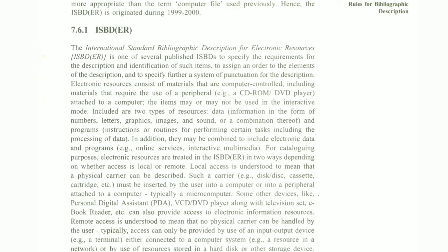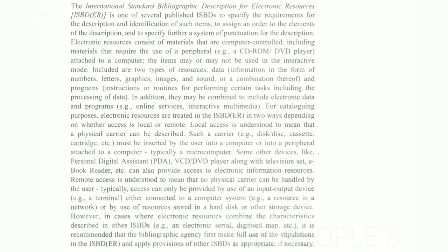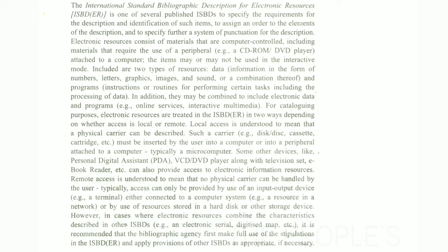ISBD-ER is the International Standard Bibliographic Description for Electronic Resources. It is one of the several published ISBDs, specifying the requirements for the description and identification of such items — to describe or identify the elements of the description, and to assign or order those elements. Electronic resources are considered materials that are computer-controlled, with examples including CD-ROM, DVD, and many more.